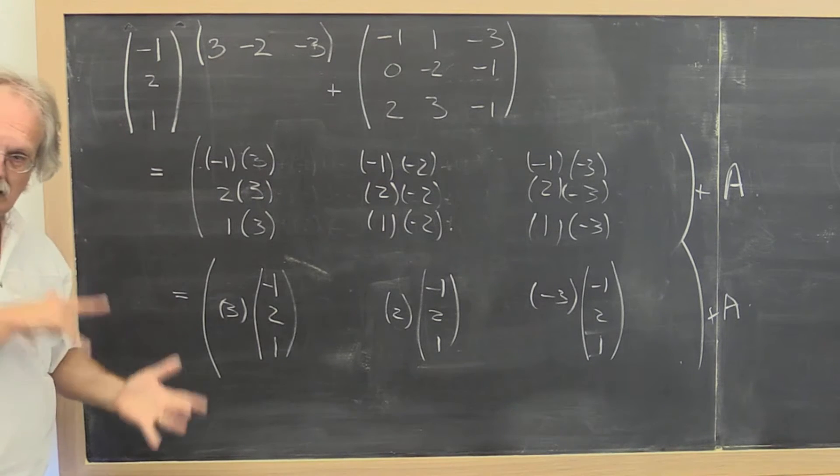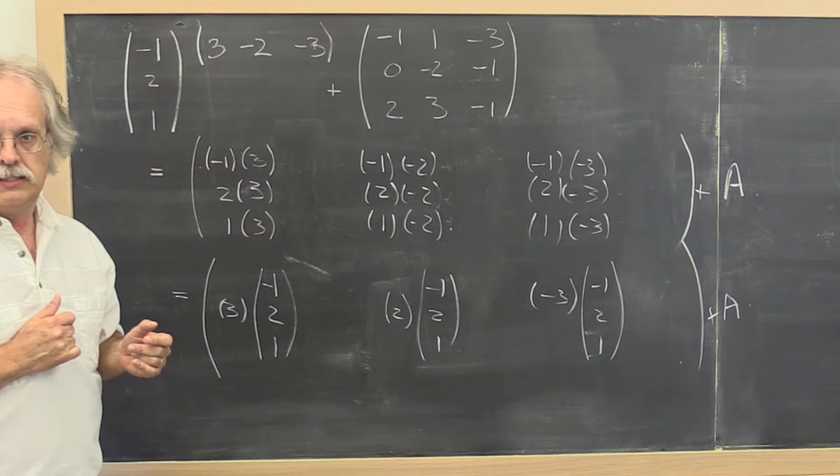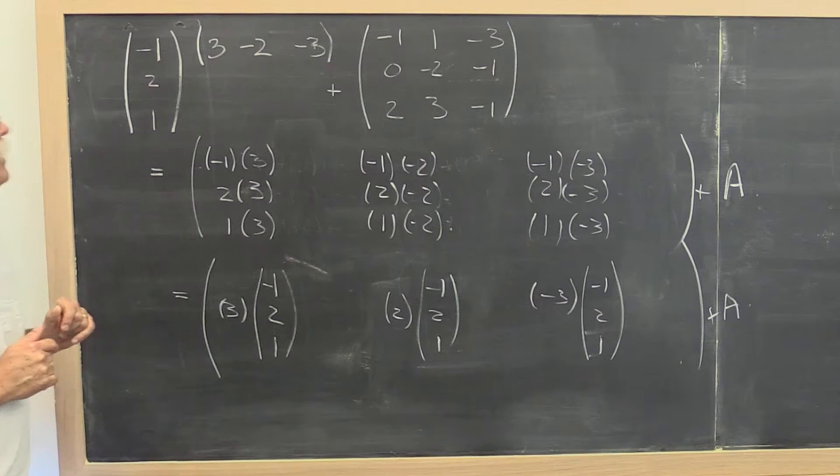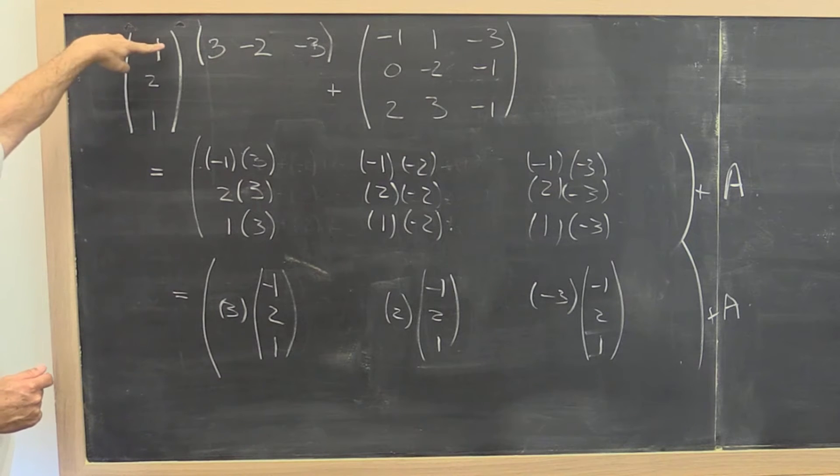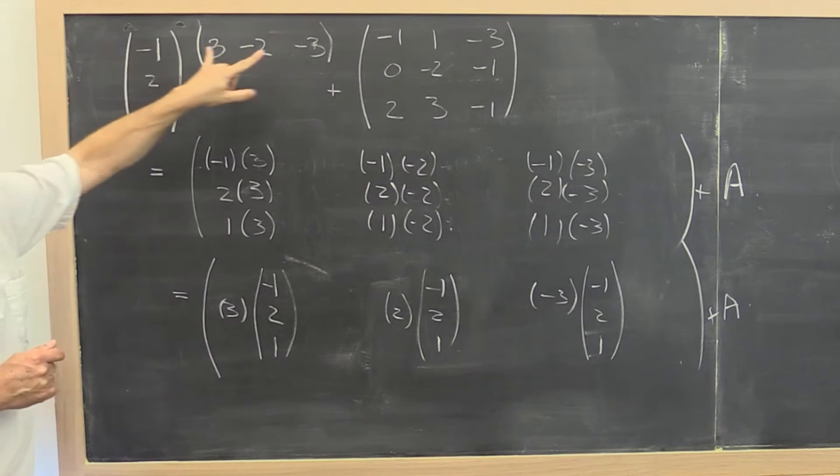There's a difference between the inner product and the outer product. People get confused by that all the time. Be careful. Inner product would be a row vector times a column vector. Outer product is a column vector times a row vector.